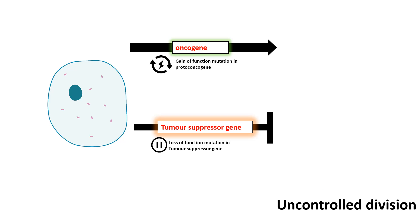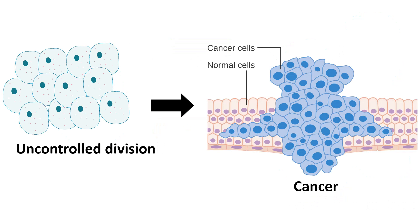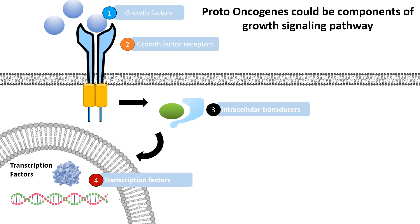Now due to some reason, if there is a mutation in either of these oncogenes or the tumor suppressor gene, then the consequence could be detrimental. A gain of function mutation in the proto-oncogene would convert it into oncogene, whereas a loss of function mutation in the tumor suppressor gene can reduce its ability to suppress the tumor or uncontrolled growth. As a result, what would happen is uncontrolled growth. When cell division is uncontrolled, it might ultimately lead to tumor formation which might turn into cancer.